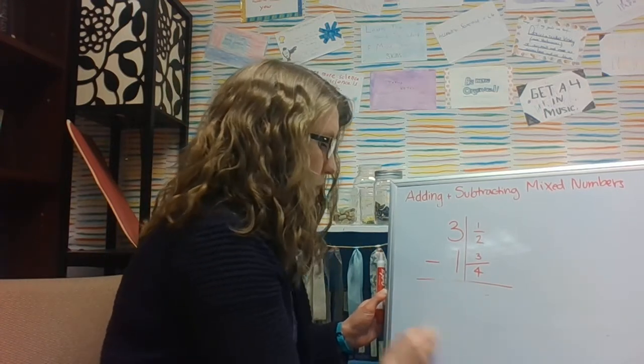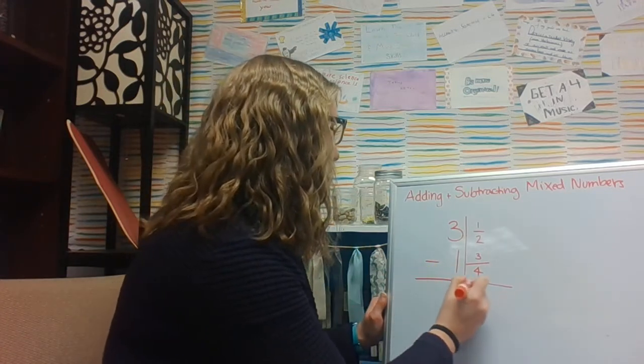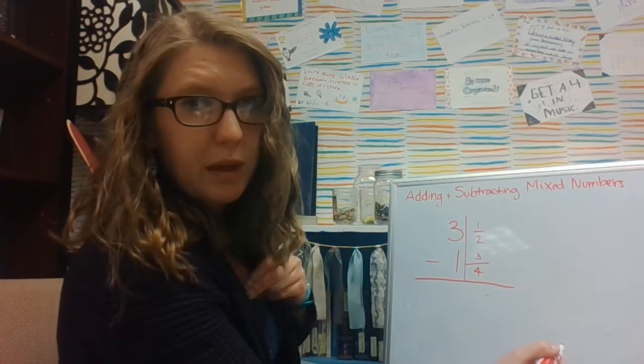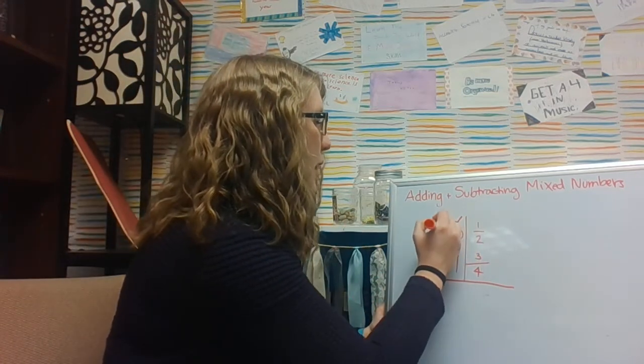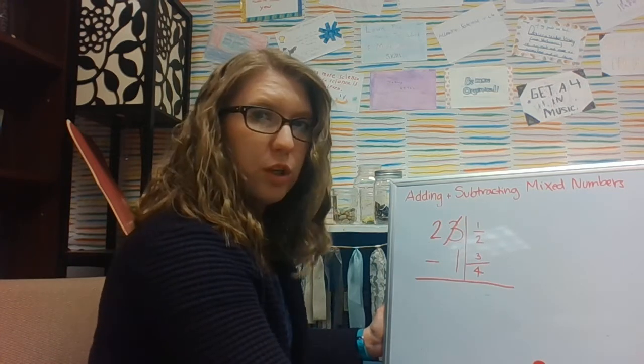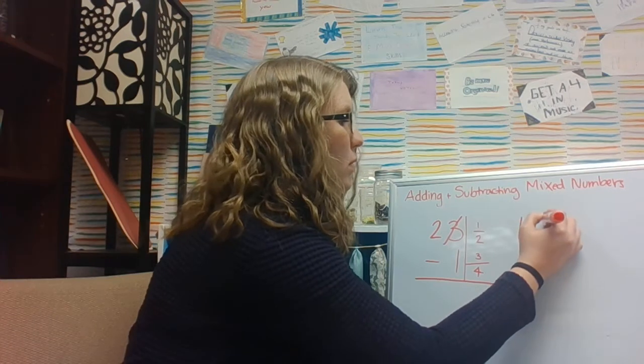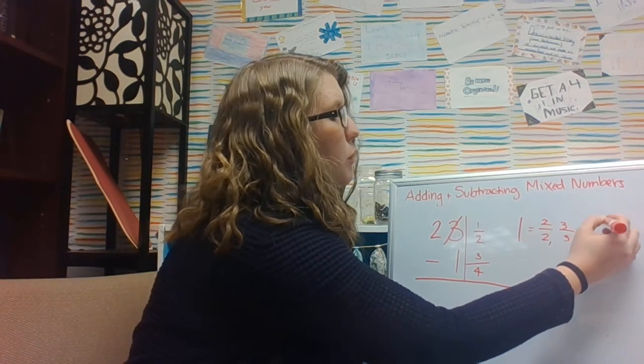Typically, that's not what we do. Typically, we want to think about regrouping some pieces to make this work better. So instead of 3, I can take a whole away, change this to a 2, and now I take a whole away. And remember that 1 whole can be 2/2, 3/3, 4/4, 5/5, 6/6, and so on.